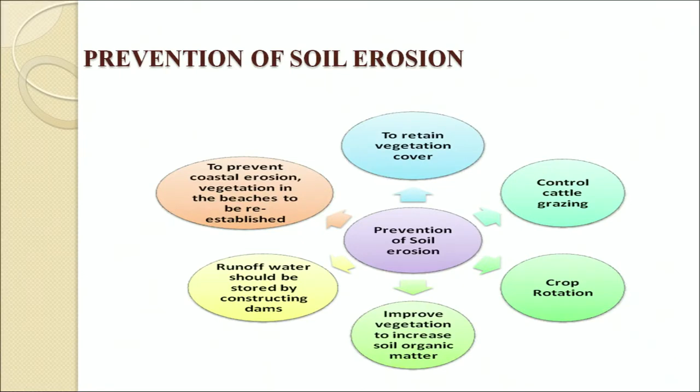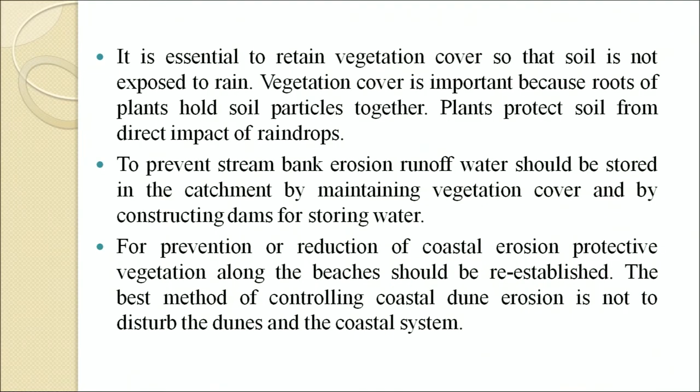For the prevention of soil erosion, vegetation cover is important because roots of plants hold soil particles together. To prevent stream bank erosion, runoff water should be stored in the catchment by maintaining vegetation cover and by constructing dams for storing water. For prevention or reduction of coastal erosion, protective vegetation along beaches should be re-established. The best method of controlling coastal dune erosion is not to disturb the dunes and the coastal system.